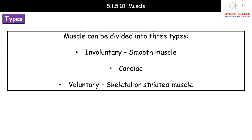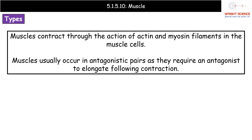When we are talking about muscle, we are talking about three different types for your A-level. We've got involuntary or smooth muscle, cardiac muscle, and the voluntary, which is the skeletal or striated muscle. The way that muscles contract is through the action of two filaments: actin and myosin, and they're both proteins. Those two filaments are going to interact with each other, and that means we will have a contraction of the muscle itself.